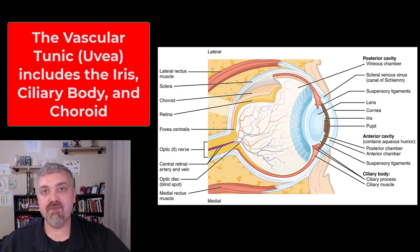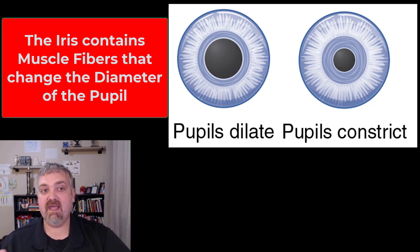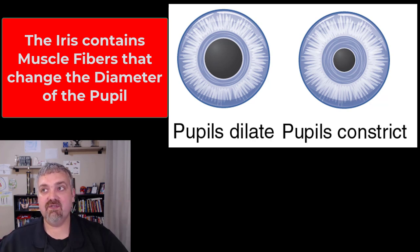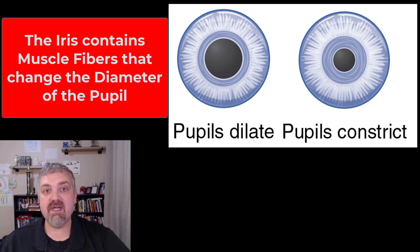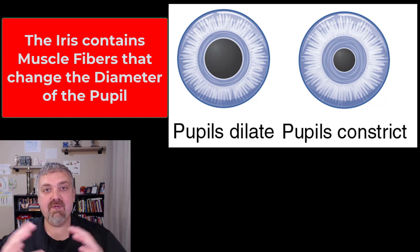The middle vascular tunic, also known as the uvea, has three different sets of structures: the iris, the ciliary body, and the choroid. The iris has muscle fibers that change the diameter of the pupil depending on how much light there is. With lots of light, pupils are constricted; in darkness, pupils dilate to get every photon of light into the eye. The pupillary constrictor muscles constrict the pupil, while the pupillary dilator muscles do the opposite. So the iris controls the diameter of the pupil.